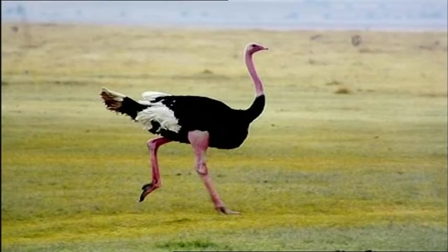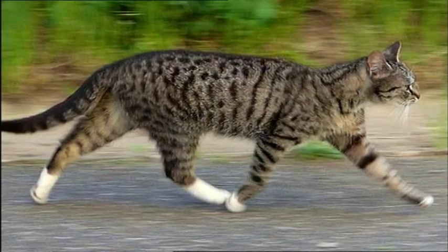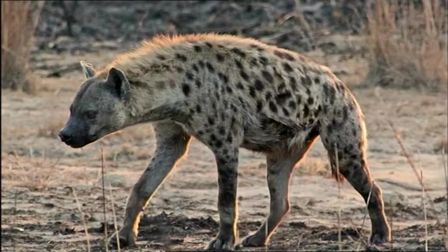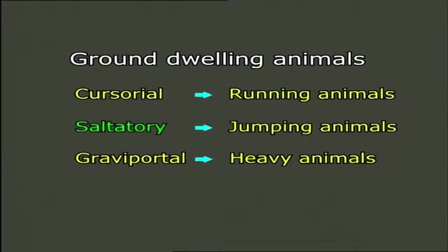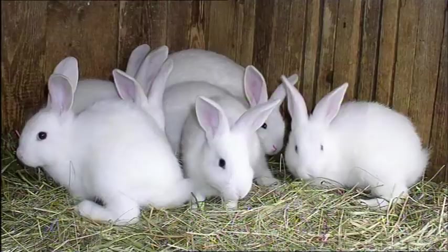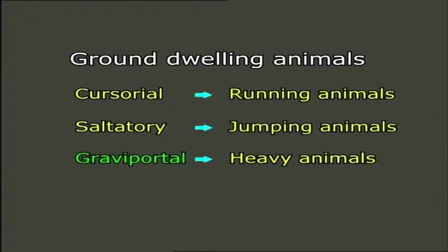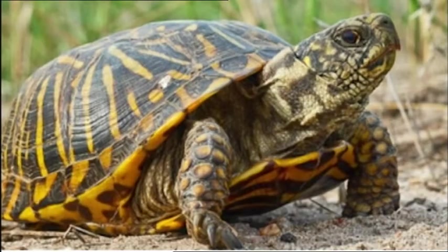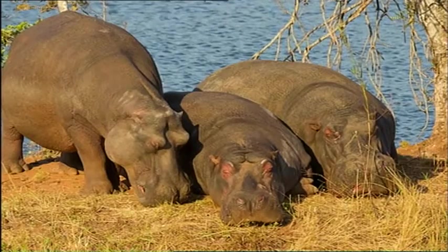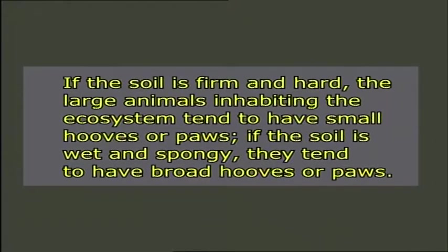Ground-dwelling animals may be cursorial, that is running, such as ostrich, wolves, cats, bears, and hyenas; or saltatory, that is jumping, such as rodents, rabbits, and kangaroos. These animals exhibit different kinds of adaptations for different kinds of soils. For example, if the soil is firm and hard, large animals inhabiting the ecosystem tend to have small hooves or pores. If the soil is wet and spongy, they tend to have broad hooves or pores.